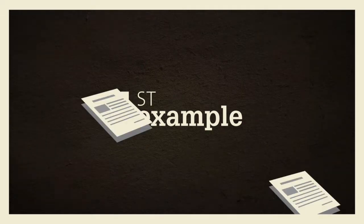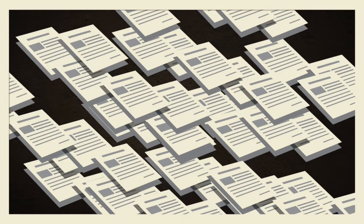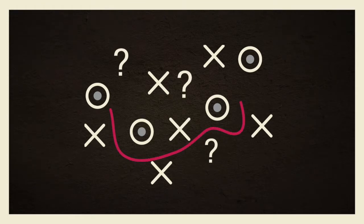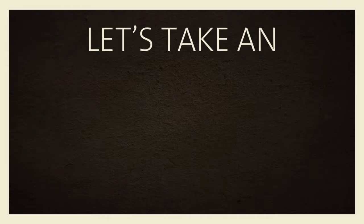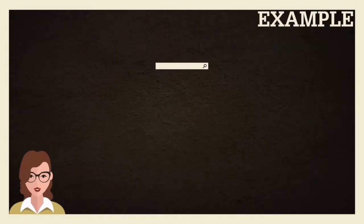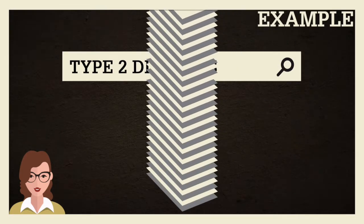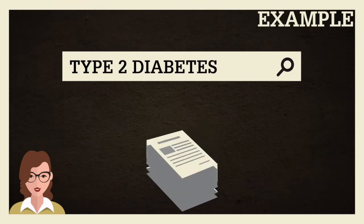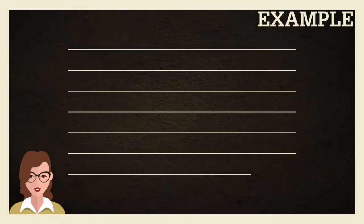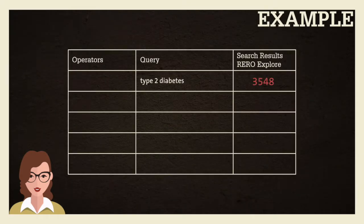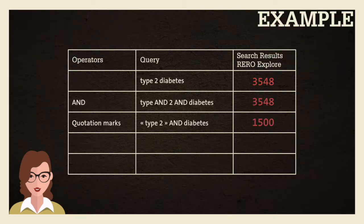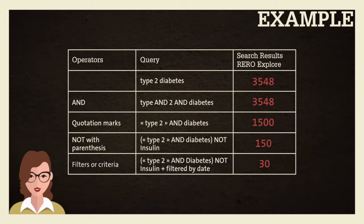Let's look at the first case, the most common: too many results, which is unmanageable. You'll need a different strategy to avoid drowning in a sea of references. Like Anna, you're searching for documents on type 2 diabetes. You typed it word for word into the search engine and got far too many results. To narrow the search results, begin by writing your query using Boolean operators, quotation marks, NOT, and parentheses, filters or criteria.